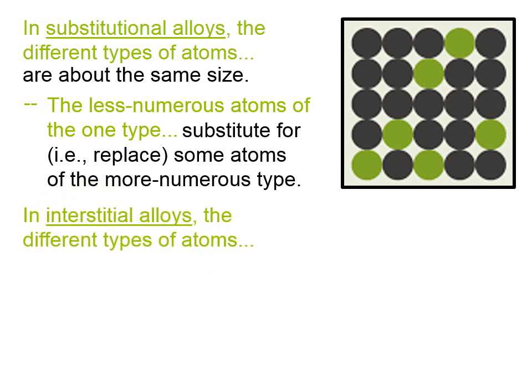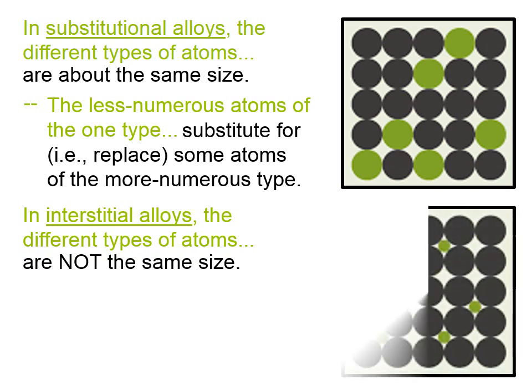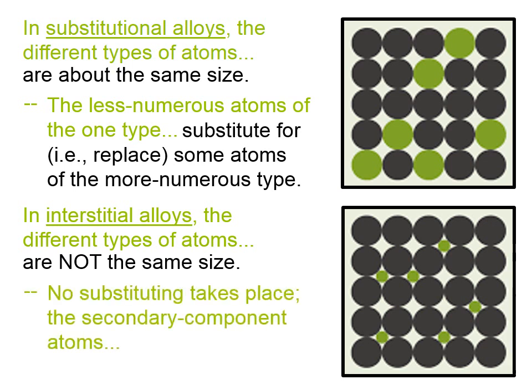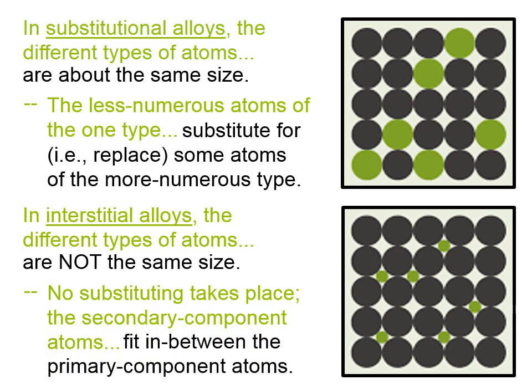In an interstitial alloy, the different types of atoms are not the same size. Here is a model of an interstitial alloy, where atoms of one type fit into the so-called interstitial spaces in the crystal of the primary component. In an interstitial alloy, no substituting takes place — the secondary component atoms fit in between the primary component atoms.